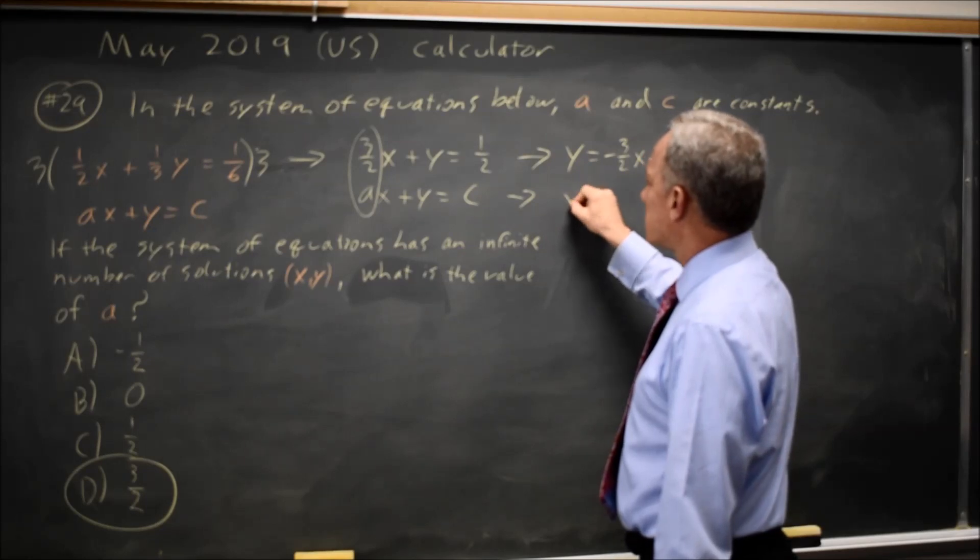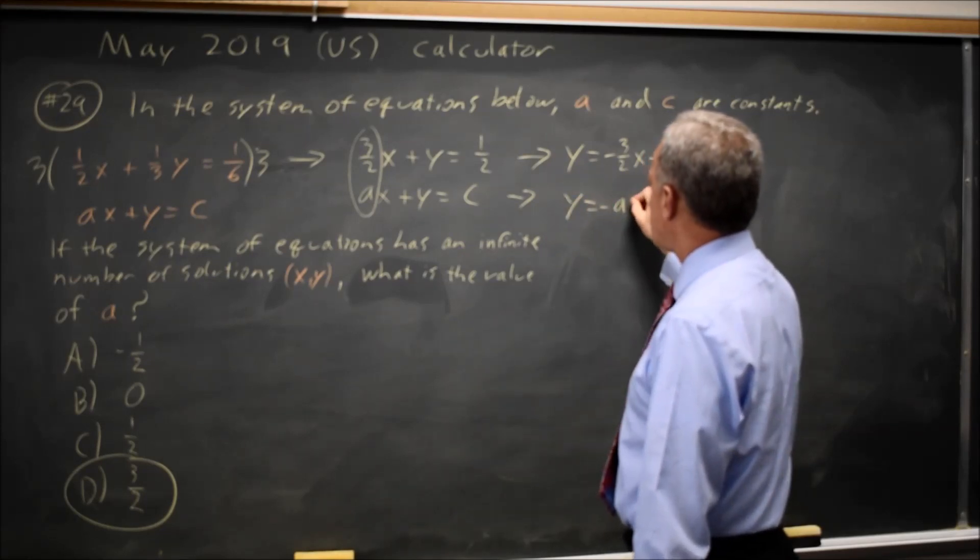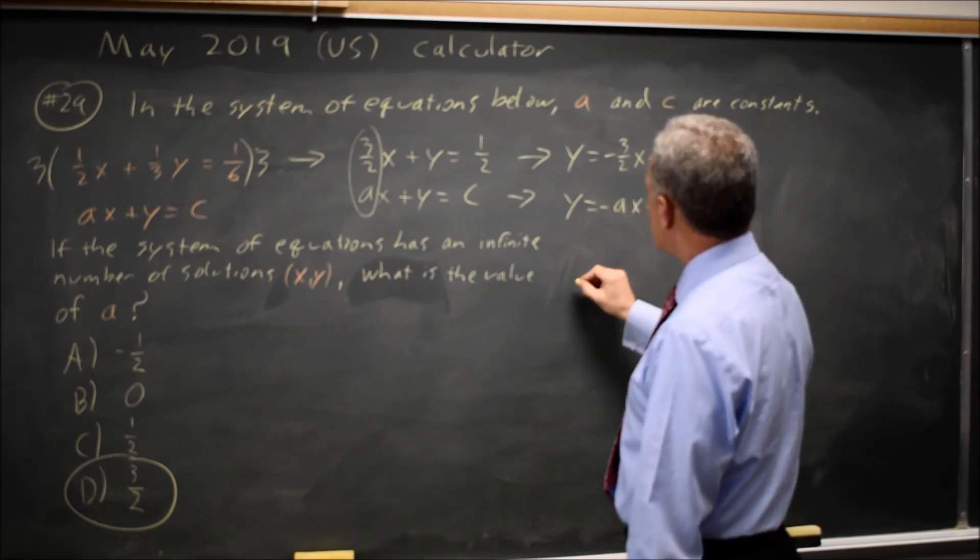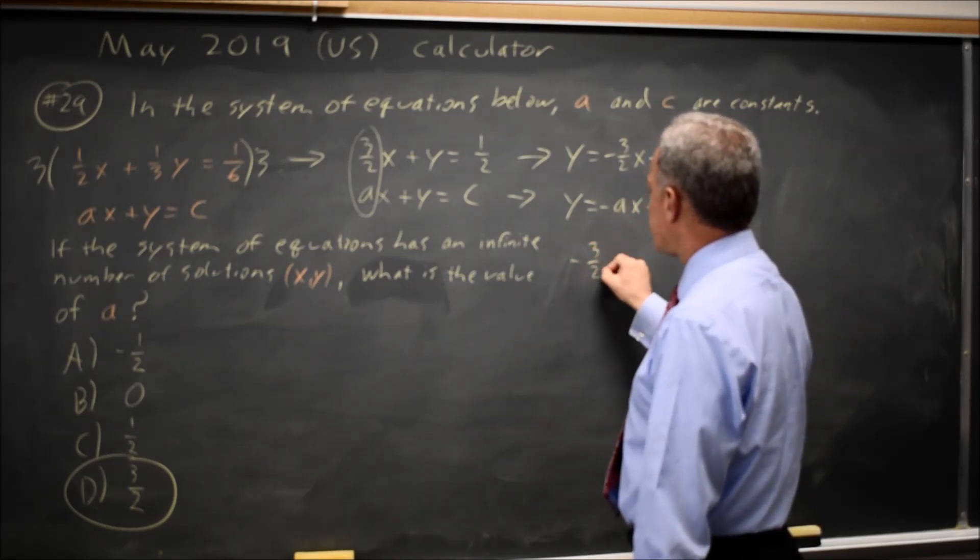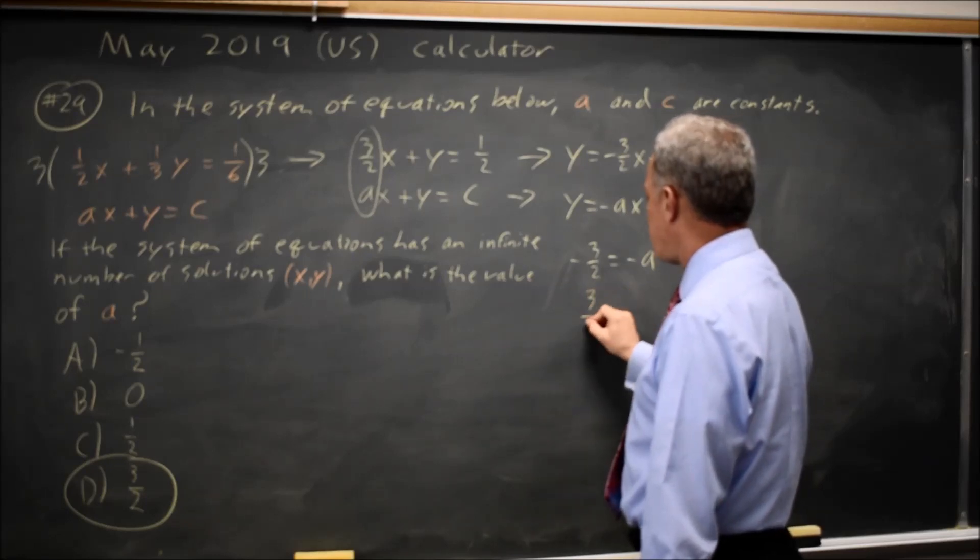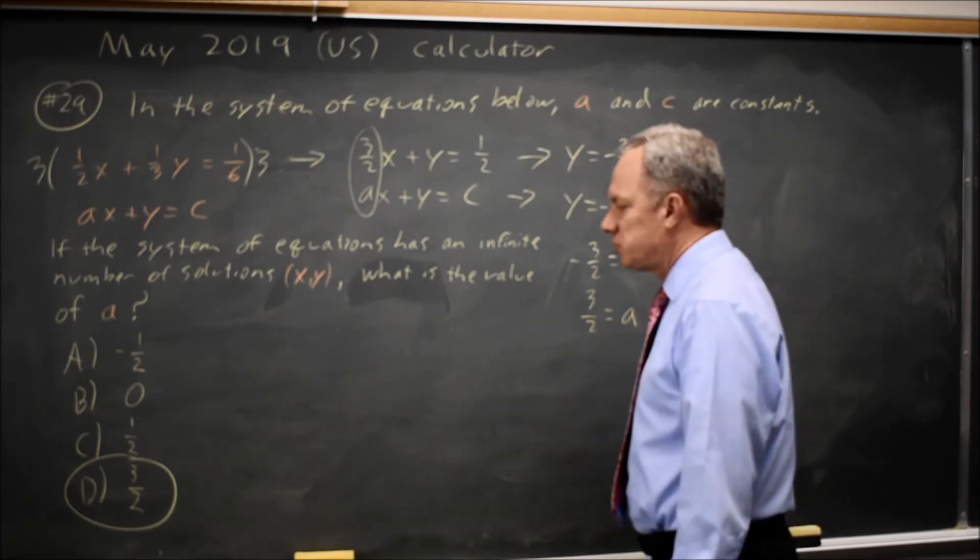And here, if I subtract ax, y equals negative ax plus c. If the slopes are the same, negative 3 halves equals negative a, multiply both sides by negative 1 and you get 3 halves equals a, which is choice D.